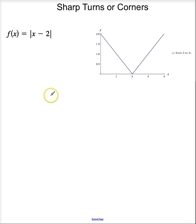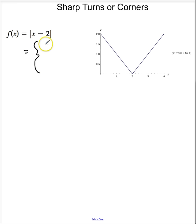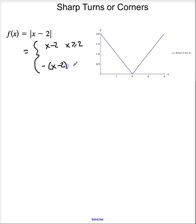This is the absolute value function. When you deal with absolute value functions, I want you to go ahead and write them as piecewise functions. So this is equal to x minus 2 for x greater than or equal to 2, and it's equal to negative x minus 2 for x less than 2.